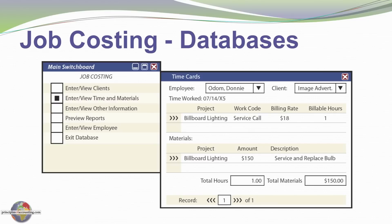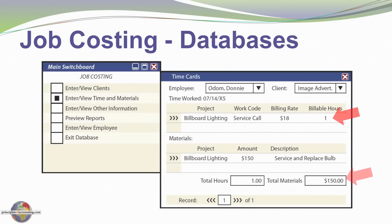Here's a screenshot of a typical database system used to capture this information. From the main switchboard I select to view time and materials, which brings up a window where I can enter time and materials worked. In this case, one billable hour of direct labor time for this project, plus the light bulb used. Once the data is entered, I can manipulate and manage it for decision-making purposes.